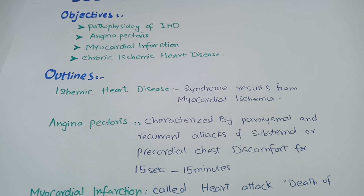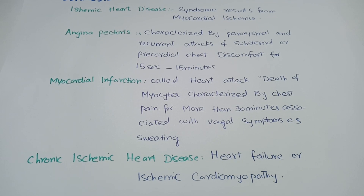Ischemic heart disease is basically a syndrome that results from myocardial ischemia. Ischemia is decreased blood supply. Angina pectoris is characterized by precordial chest pain, and this pain lasts for less than 15 minutes. Myocardial infarction, also called heart attack, means death of myocytes, and these patients present with chest pain.